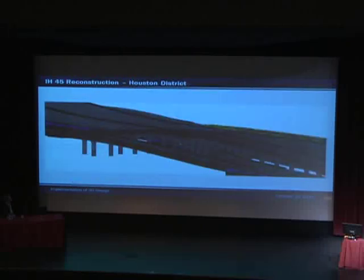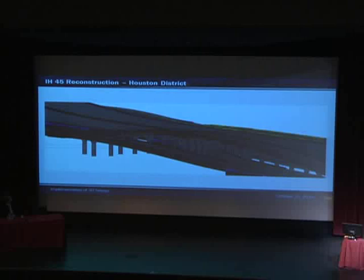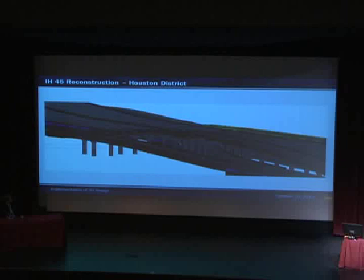Then we go to the Houston District, and this is their pilot project — the reconstruction of I-45. It's going to be rebuilding the 10-lane freeway with two-to-three-lane frontage roads, and they also threw in some braided ramps. The 3D program really helped with visualizing the braided ramps and how they all get connected and tying back into the roads and the frontage roads.